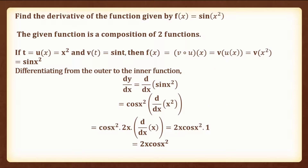The first question is: find the derivative of the function given by f of x is equal to sin of x squared. The given function is the composition of two functions. If t is equal to u of x is equal to x squared and v of t is equal to sin t, then f of x is equal to v composite u of x, which is equal to v of u of x, which is equal to v of x squared, which is equal to sin x squared.